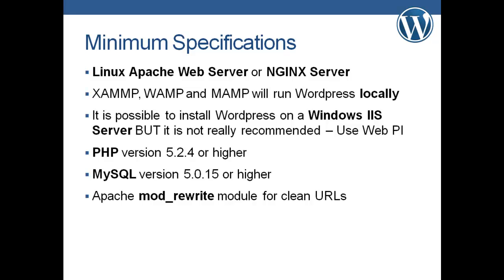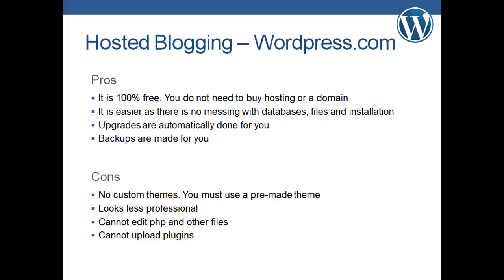XAMPP, WAMP, and MAMP are all local Apache servers that can run on local machines — that's what we'll be using. XAMPP comes with an Apache server, PHP, and MySQL. Our WordPress site won't be live on the web but will be fully functional locally. For PHP we need version 5.2.4 or higher, MySQL 5.0.15 or higher, and the Apache mod_rewrite module should be enabled. Most big hosting companies have mod_rewrite enabled by default.